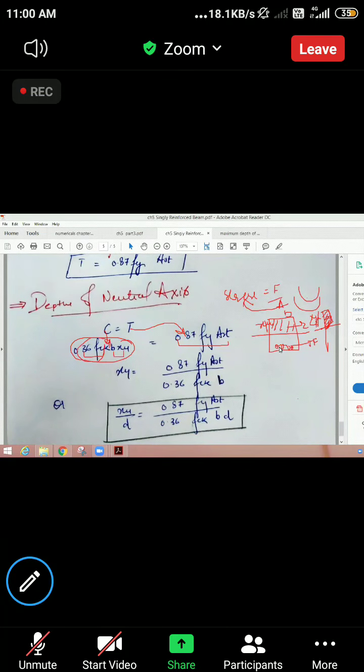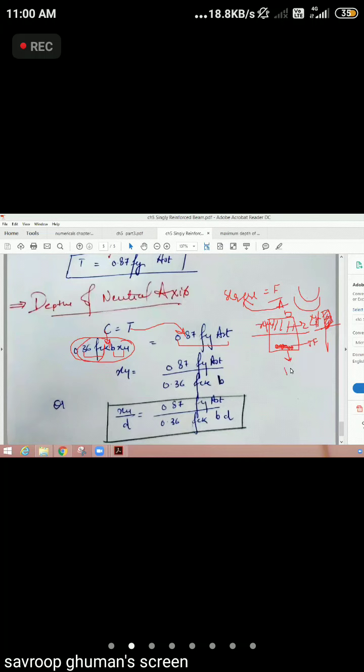If we are talking about tensile force, the tensile force is only steel-borne. We had done it in our assumptions. And I told you that the yield strength of steel is fck, but we divide the partial safety factor 1.15. So the value is 0.87 fck. The area of steel is here. Because the tensile force is steel-borne.